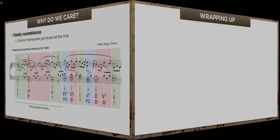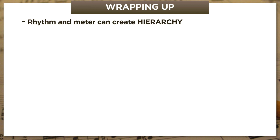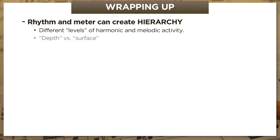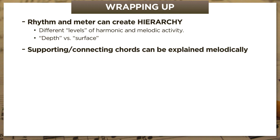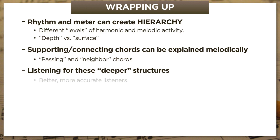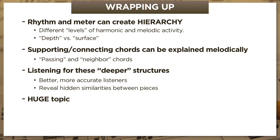So let's wrap up with a quick summary. Number one, we learned that rhythm and meter can create a sense of hierarchy where some notes and chords feel like they carry more weight than others, and this can give us the sense that a single passage can have different levels of harmonic and melodic activity — some deeper and others more superficial. Number two, supporting and connecting chords can be explained melodically as so-called passing and neighbor chords. Third and finally, listening through the surface for these deeper structures can make us better and more accurate listeners while revealing hidden similarities between pieces. I should point out that hierarchy in music is a huge topic, and we've only just scratched the surface here. But we're going to keep it in mind as we move forward, including in the very next video, where we're going to ask whether certain things that look and sound like chords aren't really chords at all. I'll see you then.